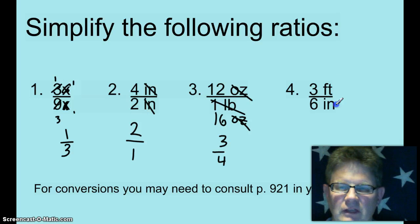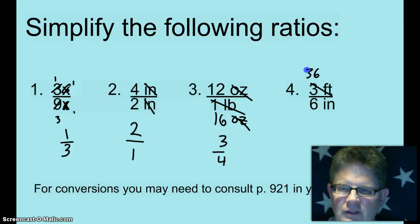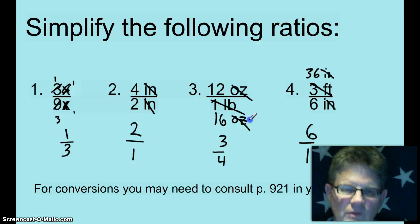And then 3 feet to 6 inches. I think it's easier to change the feet to inches. So how many inches are in a foot? 12. So that would be 36 inches. Cancel out the inches, and the ratio is 6 to 1. So sometimes, in order for us to simplify ratios, we have to change the units so that the units are the same.